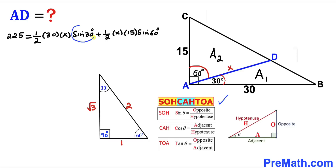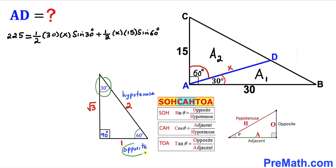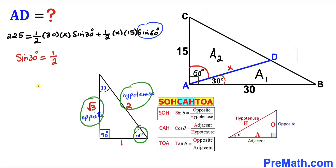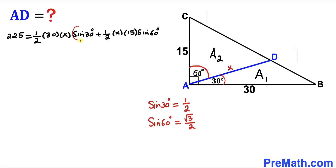Using SOH-CAH-TOA, sine of theta equals opposite over hypotenuse. For 30 degrees, the opposite side is 1 and the hypotenuse is 2, so sine of 30 degrees equals one half. For 60 degrees, the opposite side is square root of 3 and the hypotenuse is 2, so sine of 60 degrees equals square root of 3 divided by 2. I'll now substitute these values into our equation.